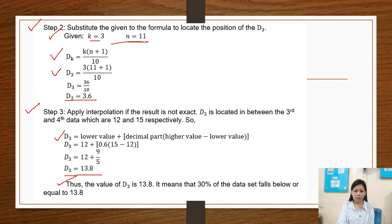Thus, the value of D3 is 13.8. It means that 30% of the data set falls below or equal to 13.8.